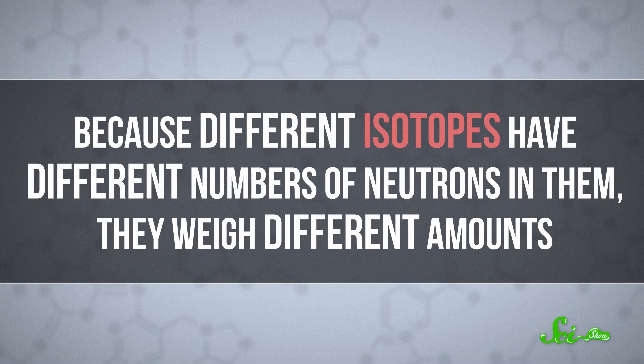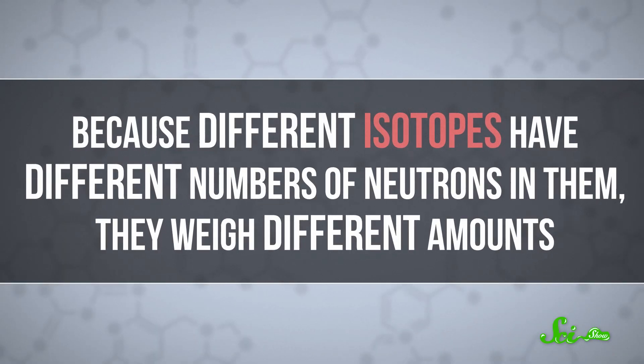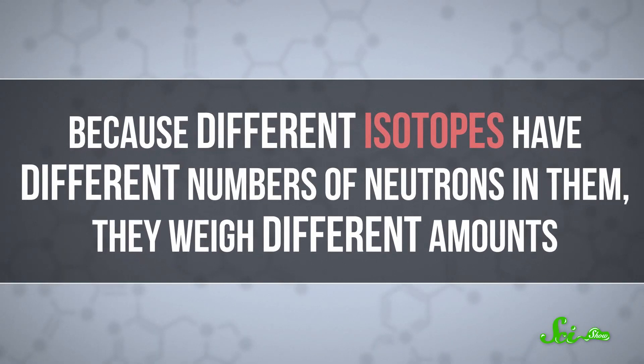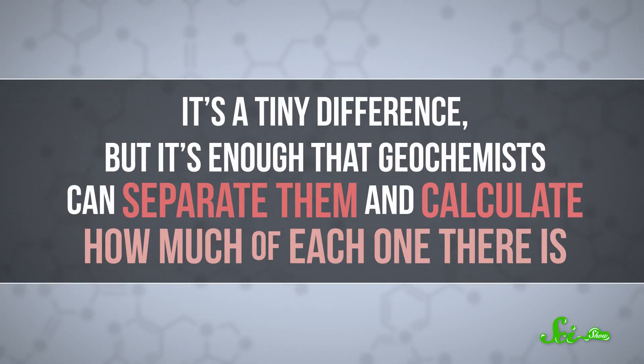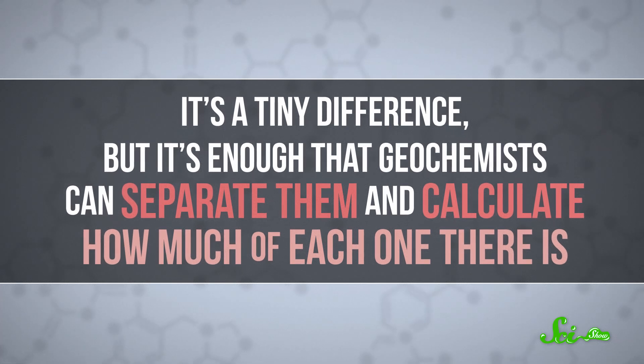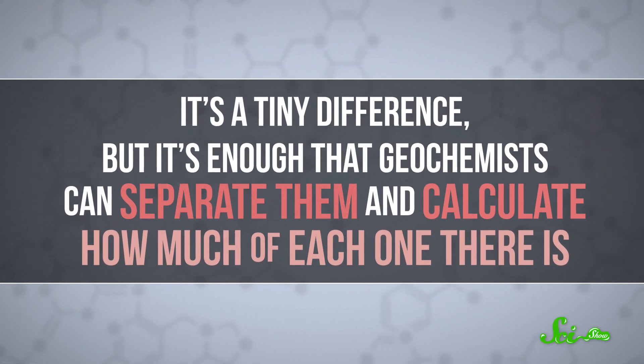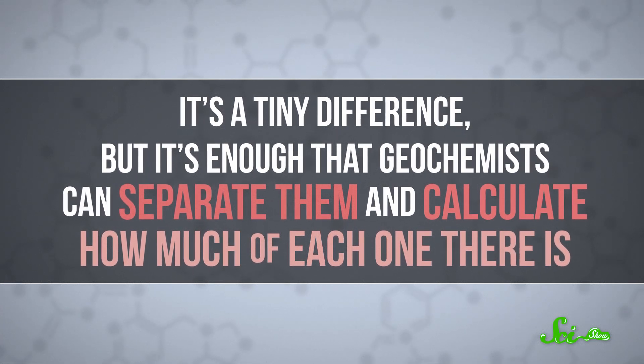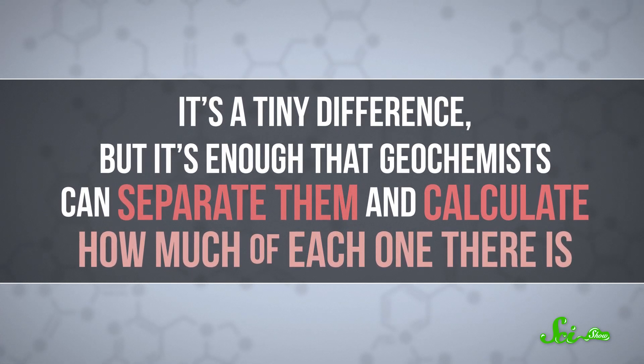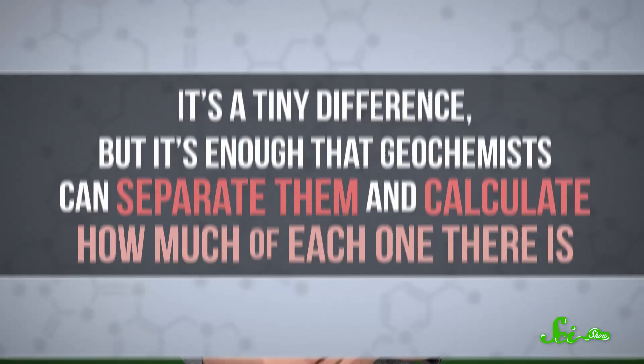Because different isotopes have different numbers of neutrons in them, they weigh different amounts. It's a tiny difference, but it's enough that geochemists can separate them and calculate how much of each one there is.